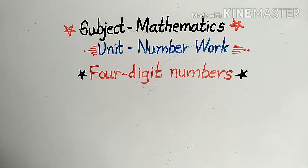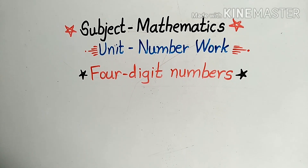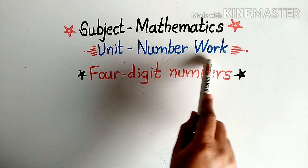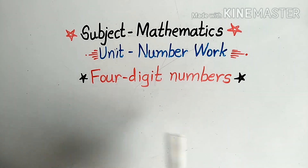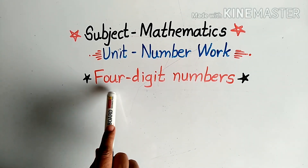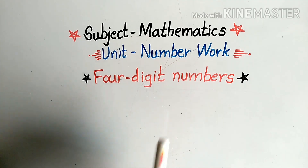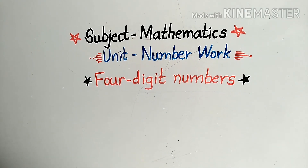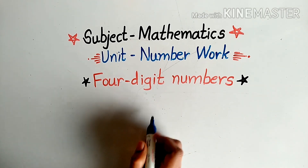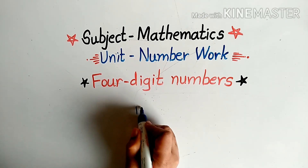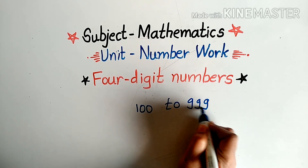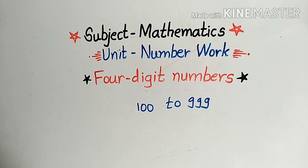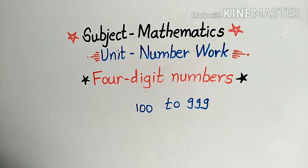Hello students, today we are going to start our new chapter — number work. In this chapter we are going to start a new topic: four-digit numbers. In the third standard we learned all three-digit numbers from 100 to 999, so today we are going to the next step — four-digit numbers.